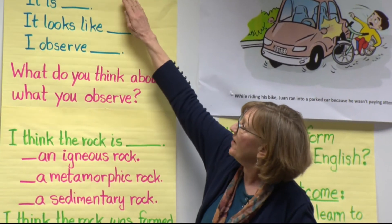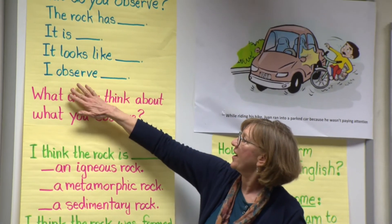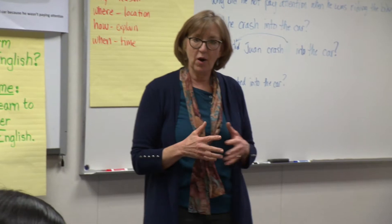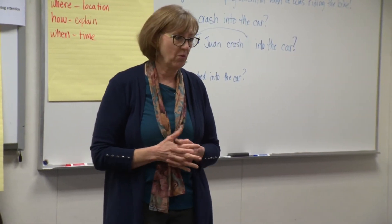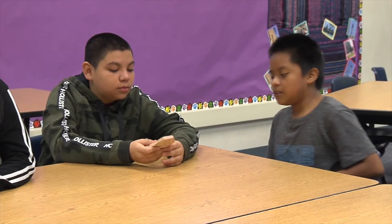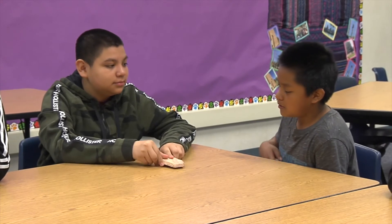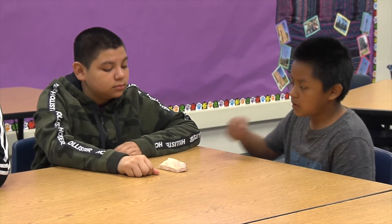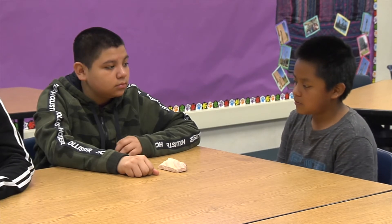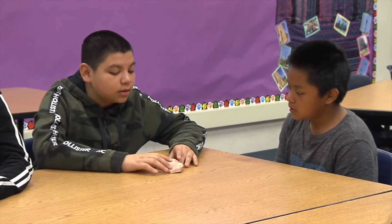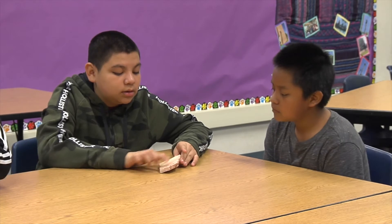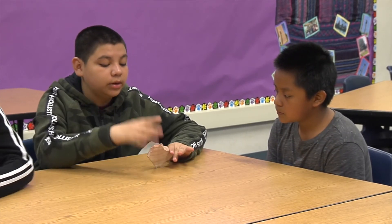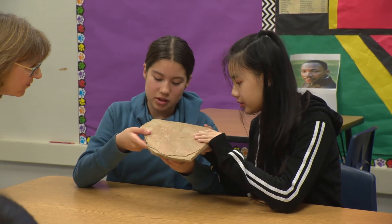So use frames like: 'The rock has...', 'It is...', 'It looks like...', 'I observe...' Use the frames and then go ahead and talk about what you see. Student: It looks like the rock has these lines, like from pressure. I think that the rock has the lines to show the ages, like when rocks were building up on it — a couple of layers.